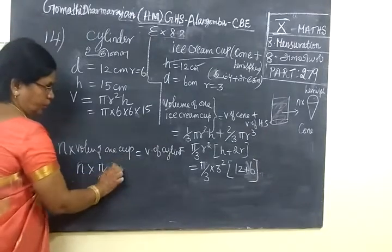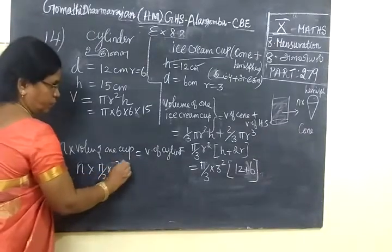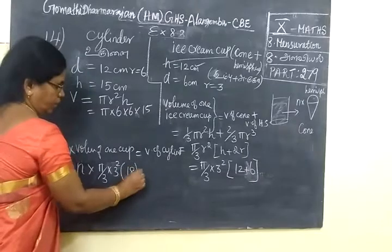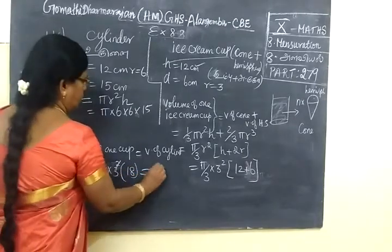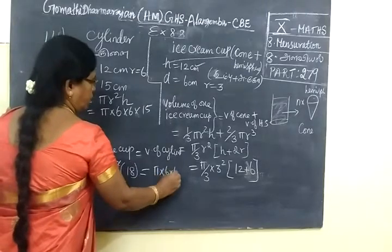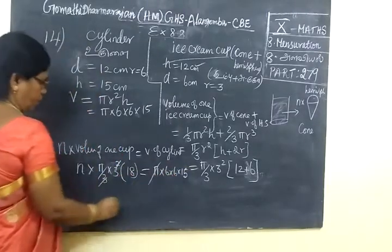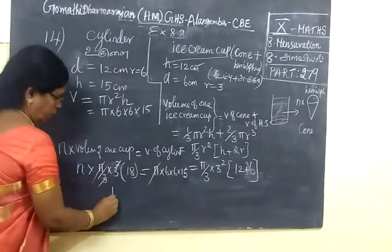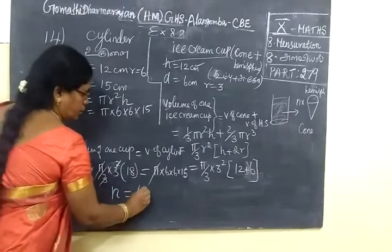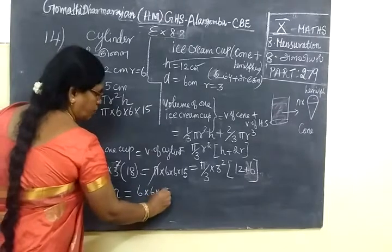So, equals 3 squared times 18. This equals π times 6 times 6 times 15. We can cancel π. Therefore, n equals (6 × 6 × 15) divided by...